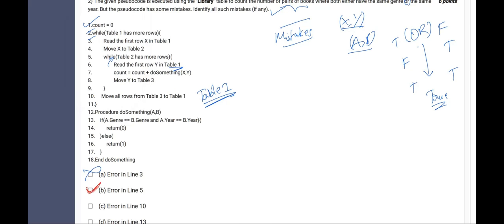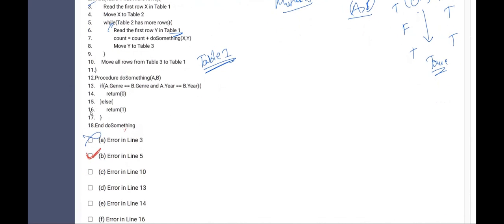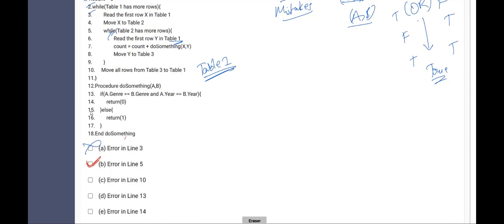Now coming down to the next line which is line 10. Line 10 move all rows from table 3 to table 1. Line 10 it is also not a mistake. Procedure do something a comma b. Line 13 error in line 13. Let us check for that. Here, there is an error because we were told about either of them. That means, it can be an or operator. Not it can be, it should be an or operator. Whereas, here it is an end operator. Therefore, line 13 is also a mistake.